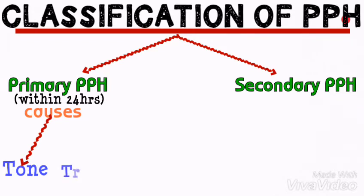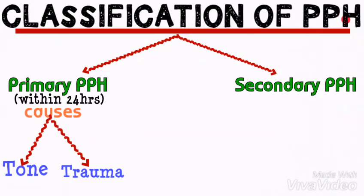The second T stands for trauma. Trauma is due to tearing of tissue and blood vessels of the genital tract during delivery. Trauma can also occur due to precipitate labor, big baby, or unskilled health personnel.